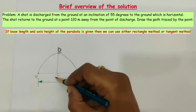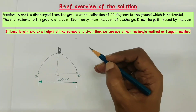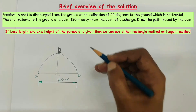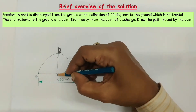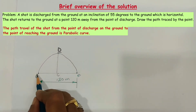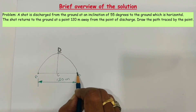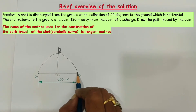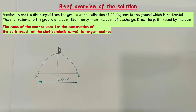If base length as well as axis height of the parabola are given in the problem, then we can use rectangle method as well as tangent method. In the present problem the base length is given but instead of giving the axis height they supplied the inclination of the shot with the horizontal, which is 55 degrees. So we need to use the tangent method. For that, draw the base line with the given length.